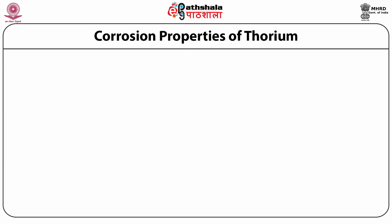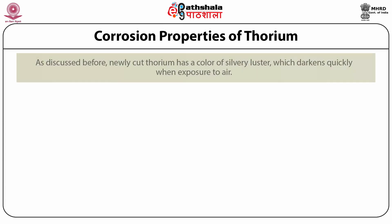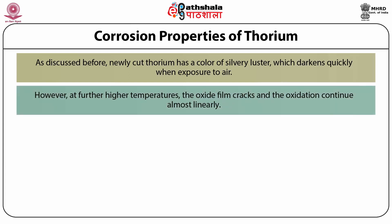Now let us discuss about the corrosion properties of thorium. Newly cut thorium has a silvery lustre which darkens quickly when exposed to air. The oxidation generates a protective oxide layer of thorium oxide which can protect up to a temperature of 350 degrees Celsius. However, at further higher temperatures, the oxide film cracks and the oxidation continues almost linearly. At a temperature of about 1100 degrees Celsius, the oxidation rate turns out to be parabolic in nature again.